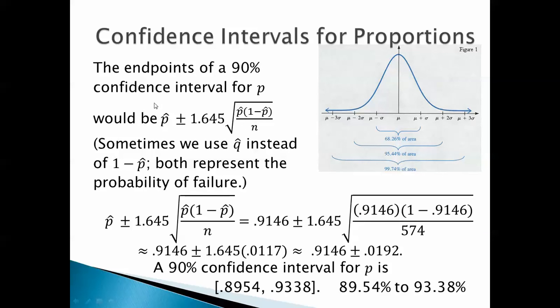The endpoints of a 90% confidence interval for p are going to be p hat plus or minus z star, which in this case is 1.645 times the square root of p hat times 1 minus p hat over n. Sometimes we use q hat instead of 1 minus p hat. Both represent the probability of failure because if p hat is the probability of success, then 1 minus p hat is the probability of failure.